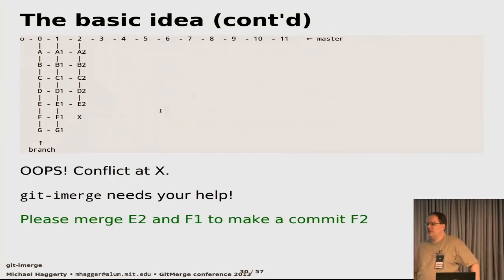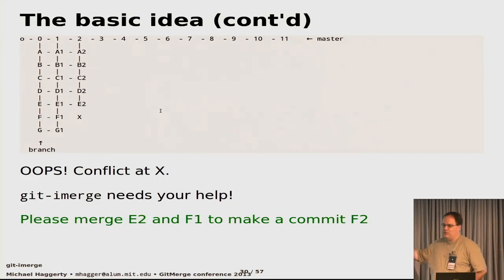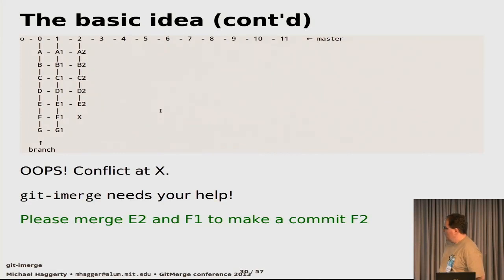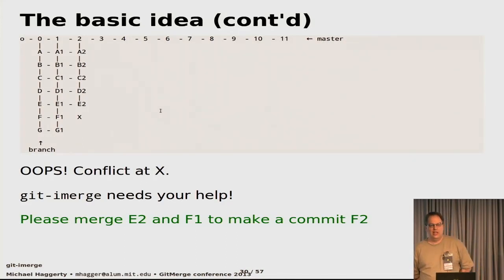Now we have a problem — not all of these merges are going to be conflict-free. The tool, git-i-merge, can automatically do all the conflict-free merges. At some point the user needs to get involved: there will be some pair of commits that have a conflict, and you're asked to resolve it. Similar to git-rebase — it goes along automatically as long as it's happy, and when it hits a conflict it presents you with a merge conflict to resolve. You commit it and check it in.